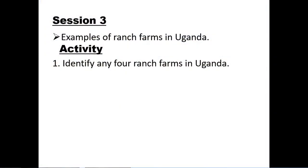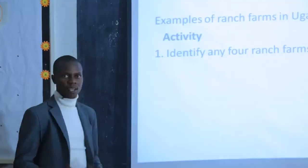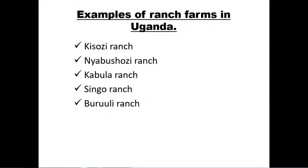Is that clear? Let's go to session three — examples of ranch farms in Uganda. Can you identify any four ranch farms in Uganda? In other words, can you identify those places where animals are kept on a large scale with an intention of providing meat or beef? In Uganda, we have Chiso's Ranch, Nyabushose Ranch, Kavula Ranch Farm, Singo's Ranch Farm, and Guruli Ranch Farm. These are large pieces of land whereby they rear animals purposely for beef or meat production.